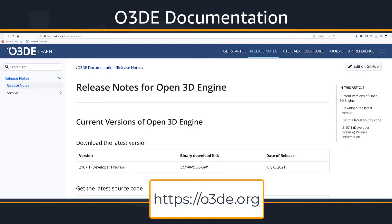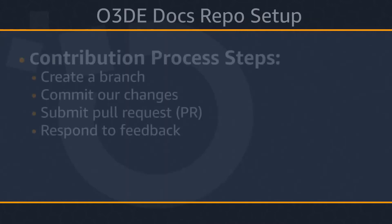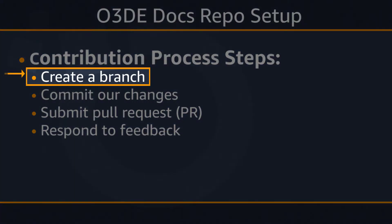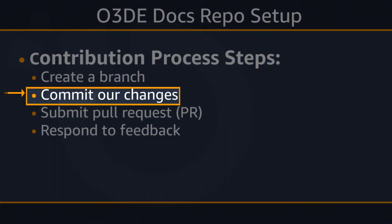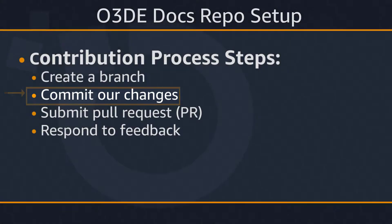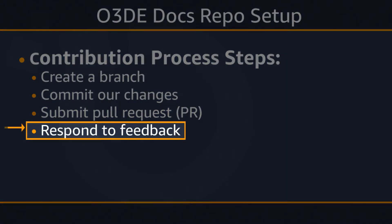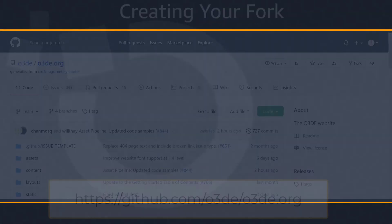Now let's set up our O3DE docs repo with the necessary tools for the contribution process. We'll look at an overview of the four basic steps. First, we need to create a branch for our changes in our fork of the O3DE docs repo. Next, we'll commit our changes to the branches on our fork, then submit pull requests from our fork to the main branch of the O3DE repo. Lastly, we respond to any feedback on our PRs until the changes are approved and merged.